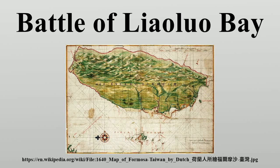The Battle of Liao Luo Bay took place in 1633 off the coast of Fukien, China. It involved the Dutch East India Company and the Chinese Ming Dynasty's navies. The battle was fought at the crescent-shaped Liao Luo Bay that forms the southern coast of the island of Kinmen. A Dutch fleet under Admiral Hans Putmans was attempting to control shipping in the Taiwan Strait, while the southern Fukien sea traffic in trade was protected by a fleet under Brigadier General Zheng Jilong.